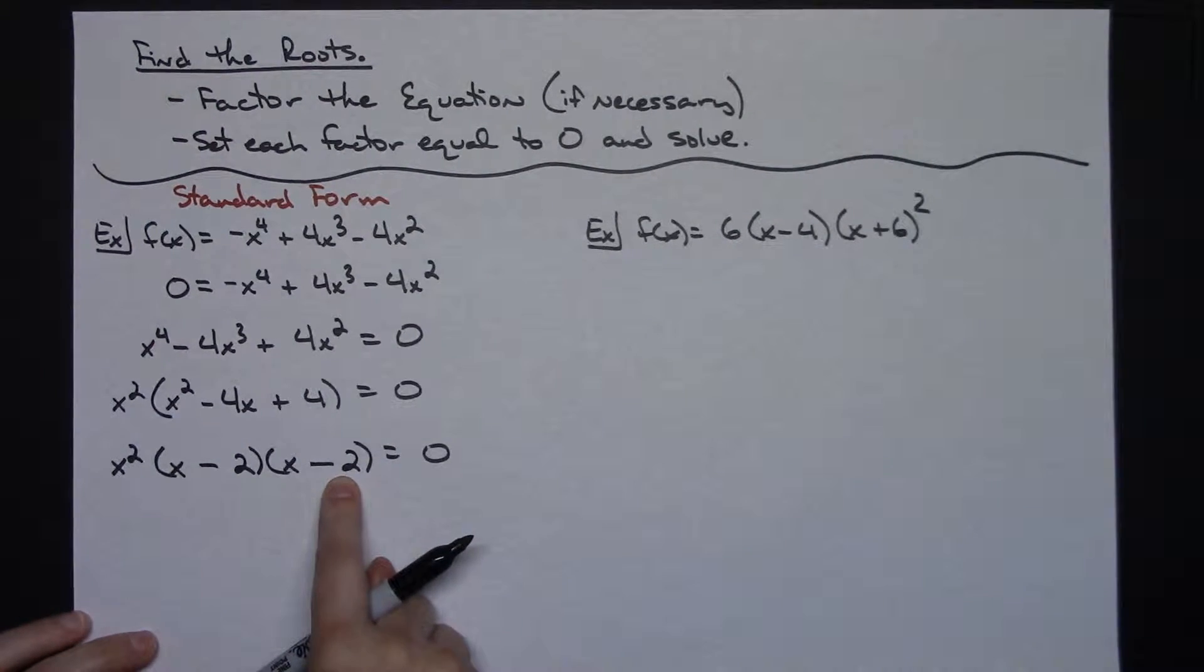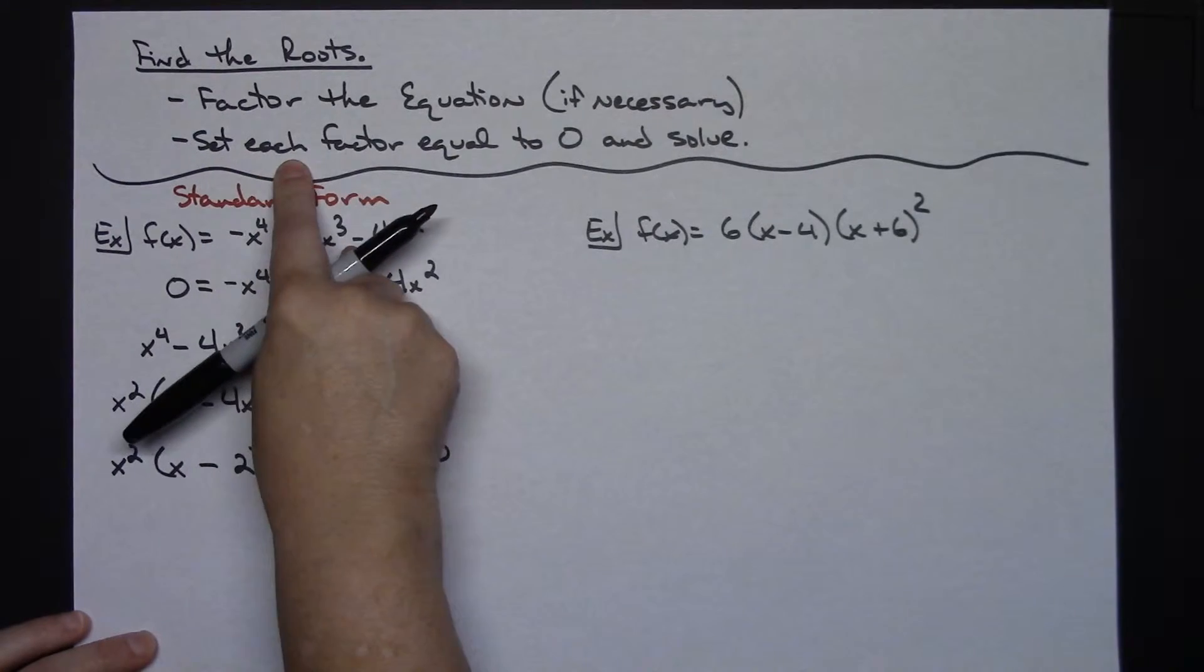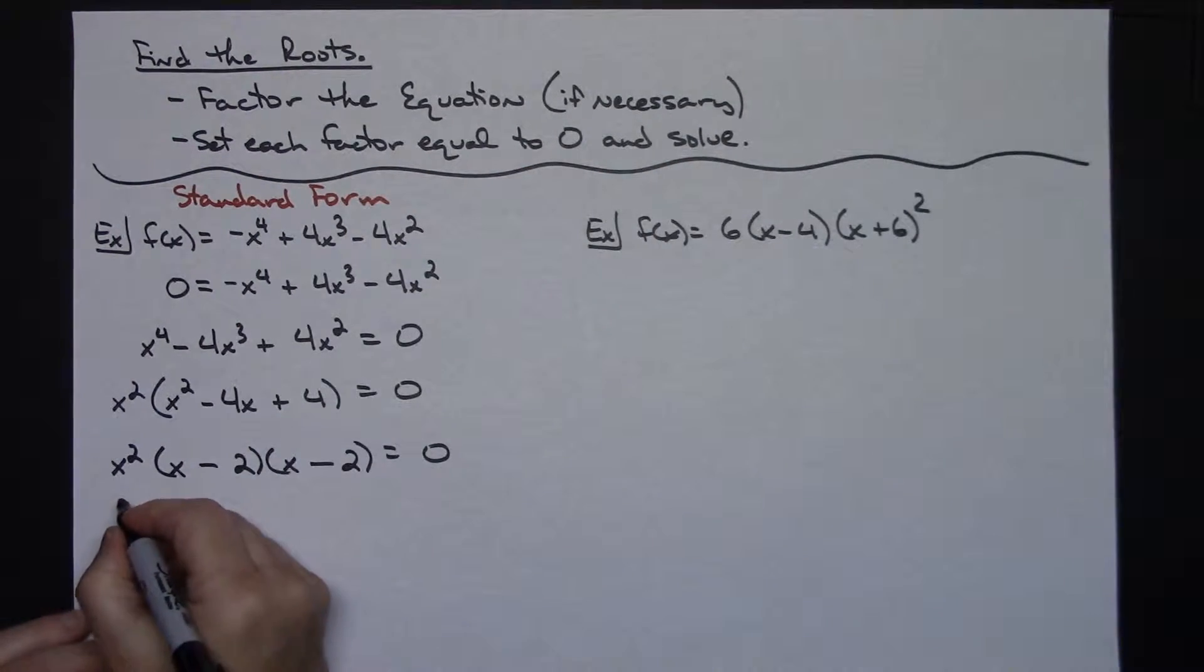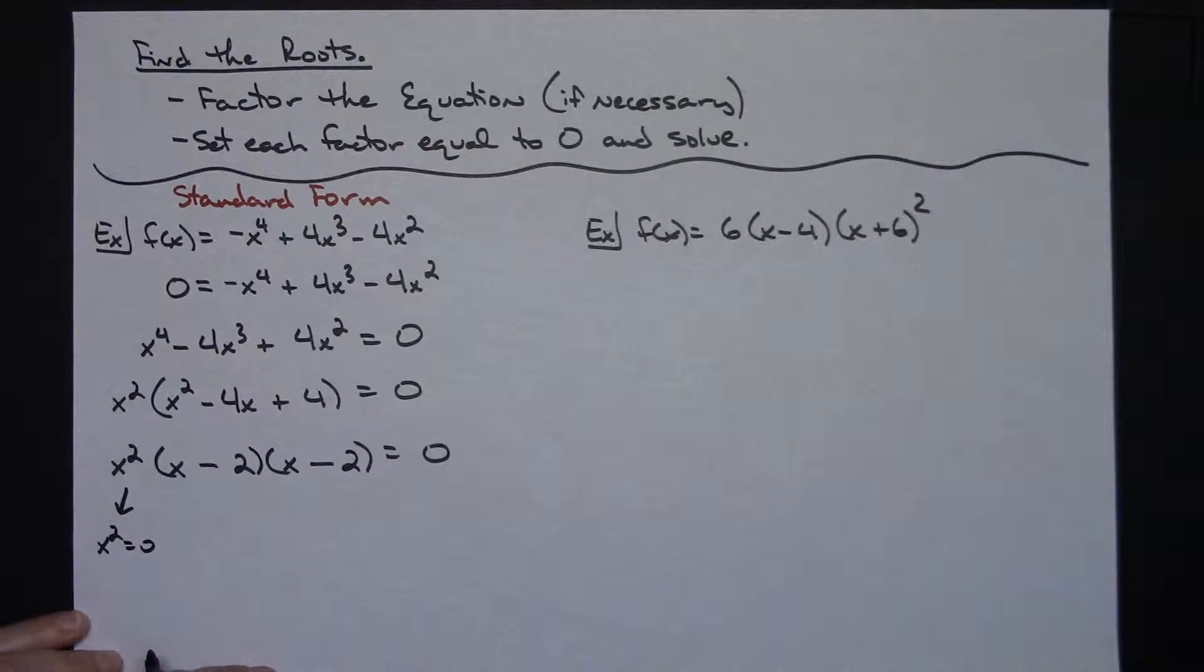I am now down to a factored form. So now I can set each factor equal to 0 and solve. When I set x squared equal to 0, I take square root of both sides so x is going to equal 0.